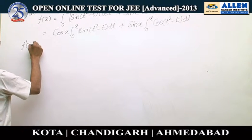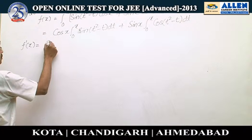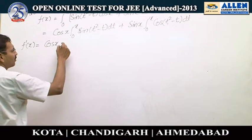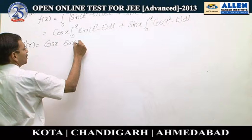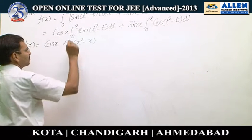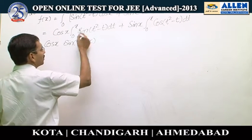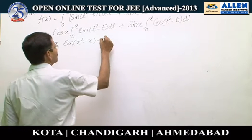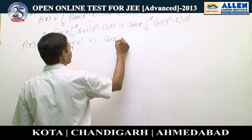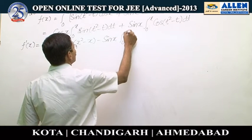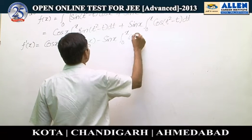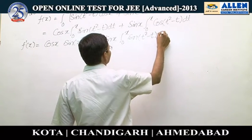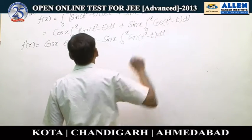Now f'(x) equals cos(x) as it is; we differentiate using Leibniz rule. sin(x² - x), the differentiation of x is 1, the 0 part is cancelled. The differentiation of cos(x) is -sin(x)·∫₀ˣ sin(t² - t) dt.